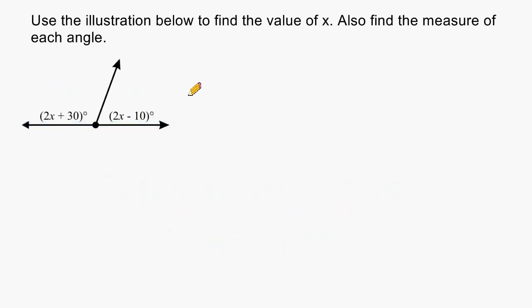On the left we have an expression that reads 2x plus 30 and on the right we have an expression that reads 2x minus 10. Because we know that both angles have a sum of 180 degrees, we are going to take 2x plus 30 and add that to 2x minus 10 and set that equal to 180 degrees.